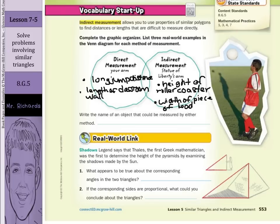Now, write the name of an object that could be measured by either method. What about a person's height? Believe it or not, even though it's quite simple to measure the person's height directly, you could use indirect measurement to measure their height as well.